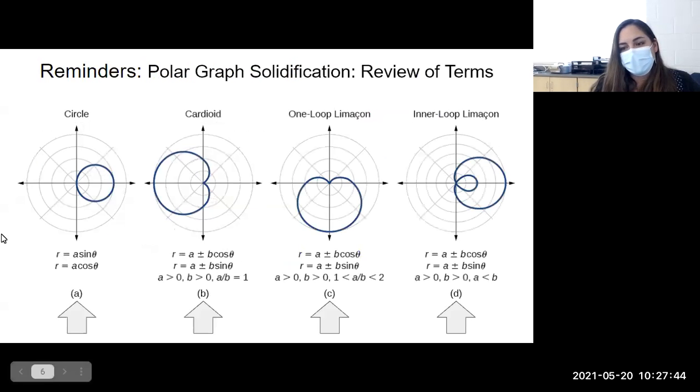Okay, now let's look at the kinds of graphs that we have studied. So on Monday, we created and wrote equations for a bunch of circles. The form of a circle would be R equals A sine theta or R equals A cosine theta, and A just refers to the diameter of your circle.